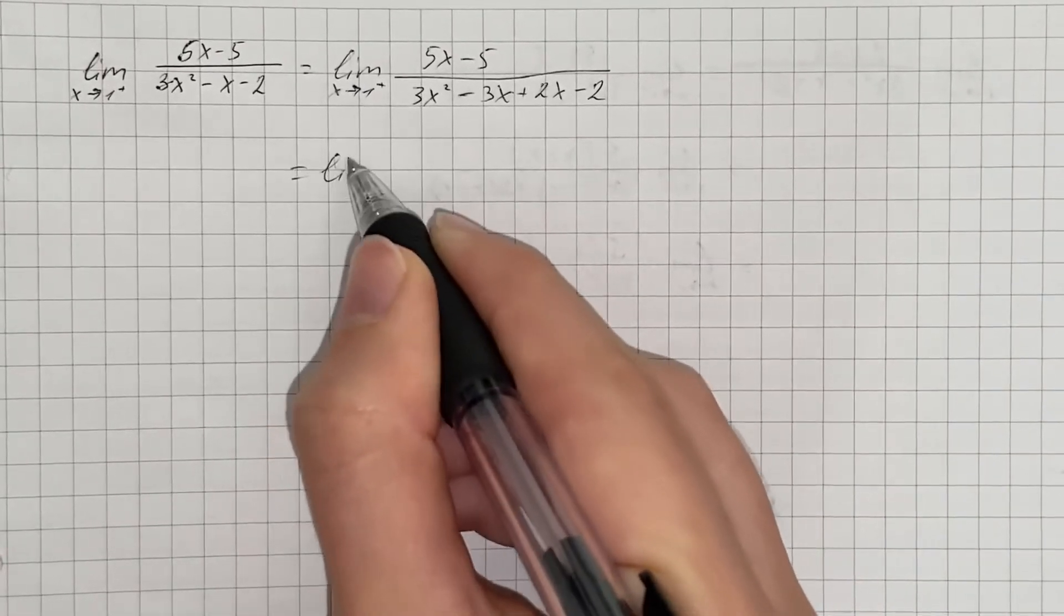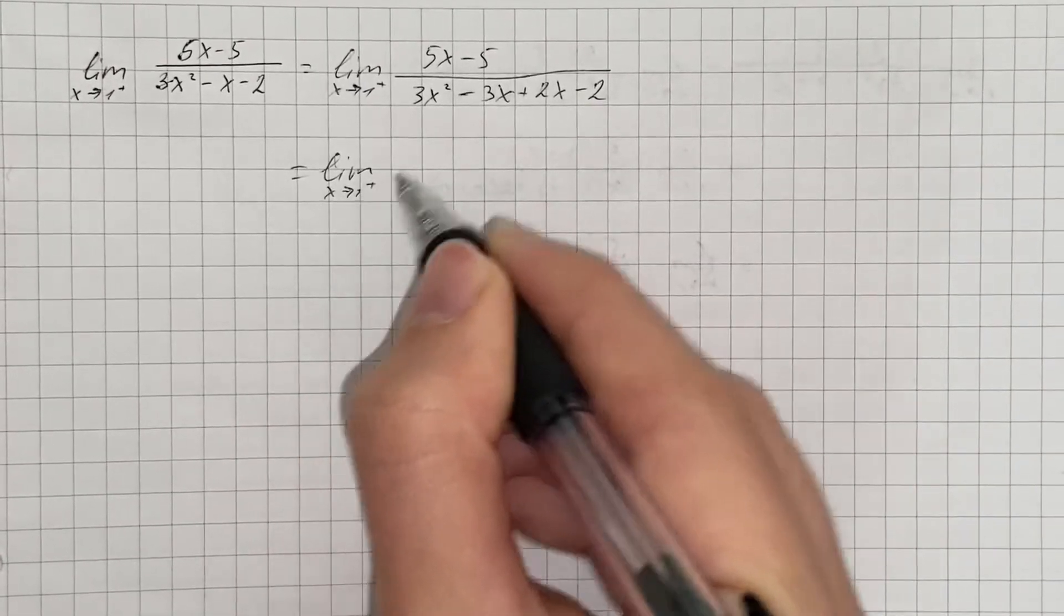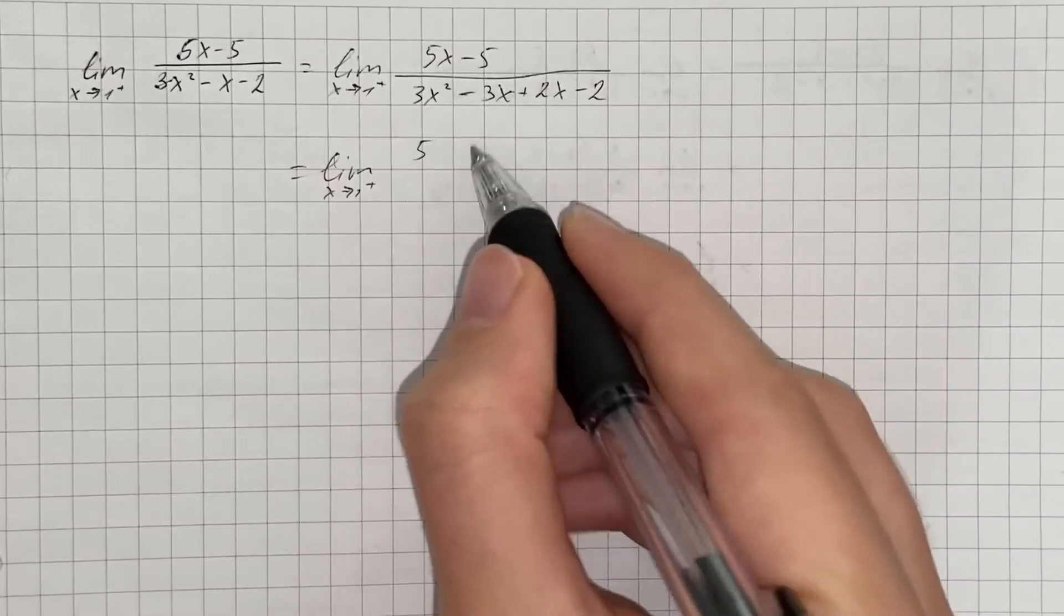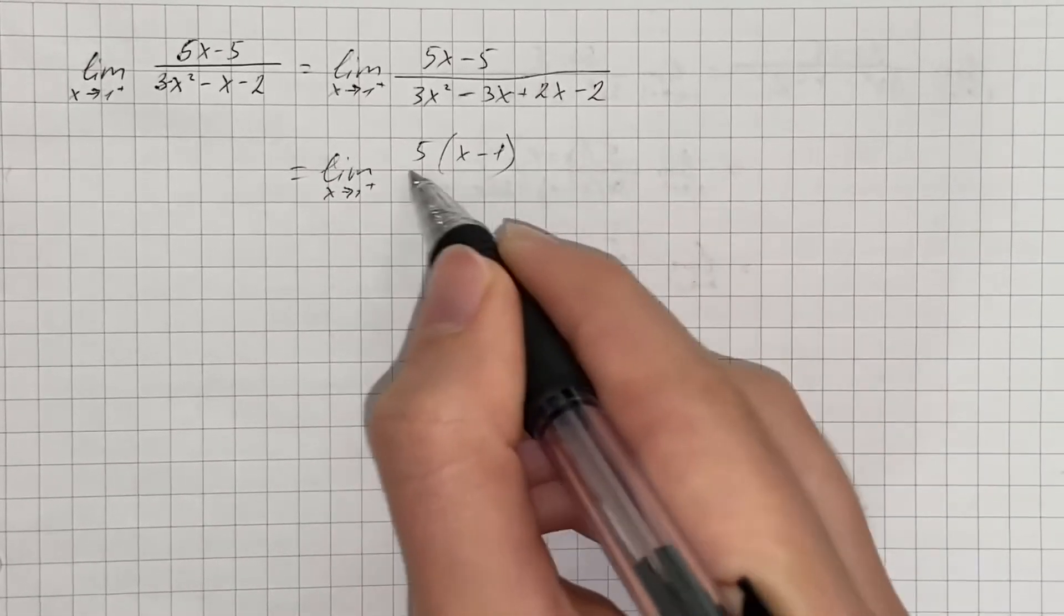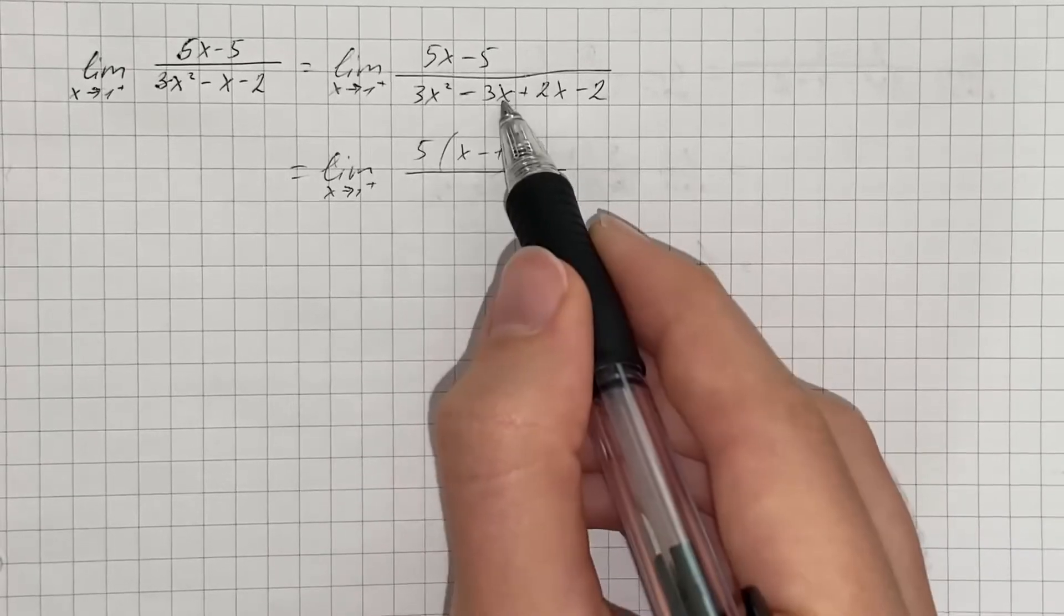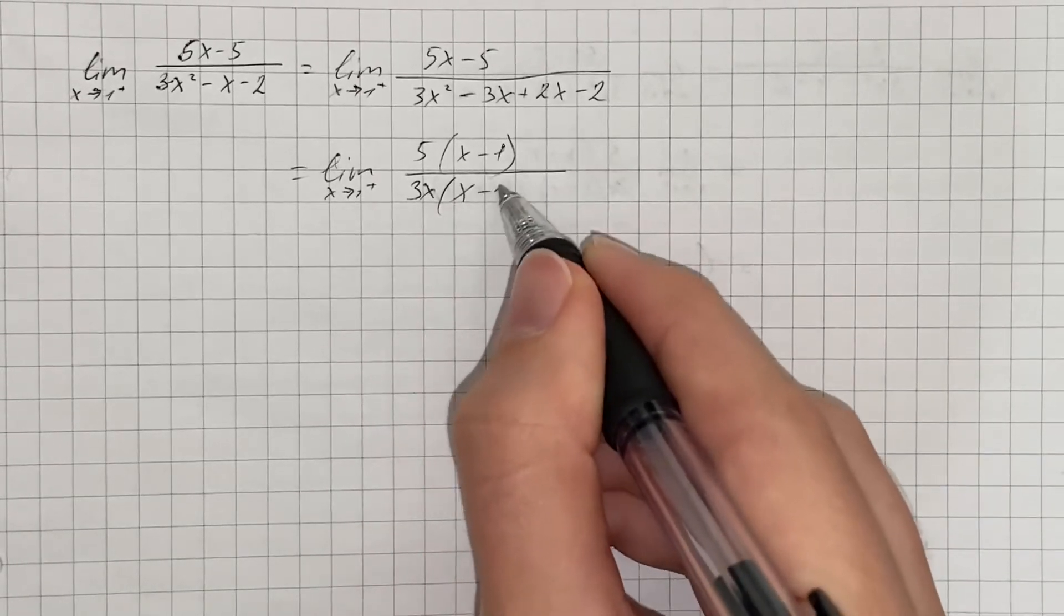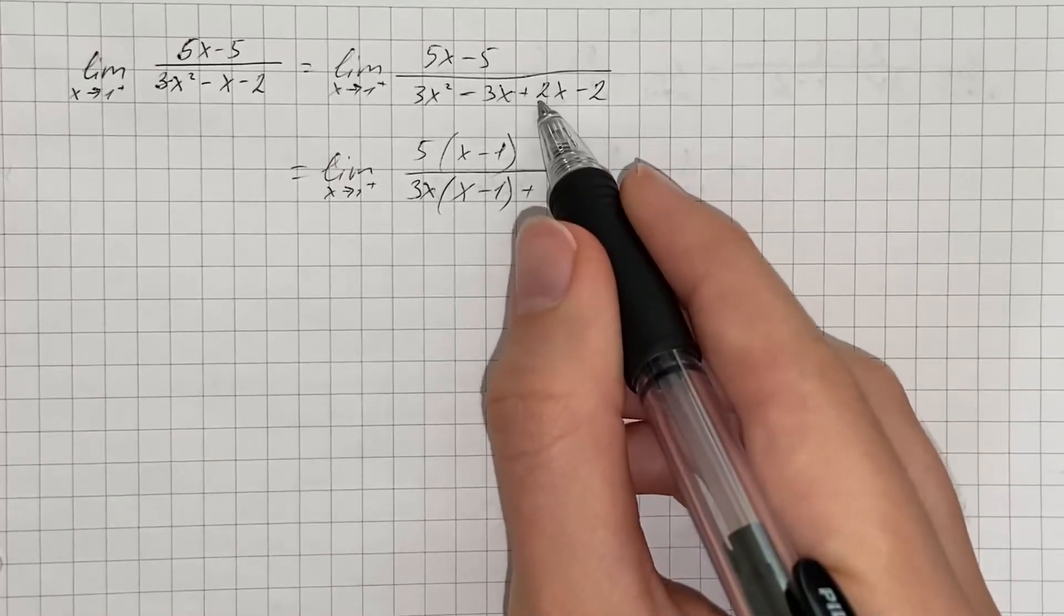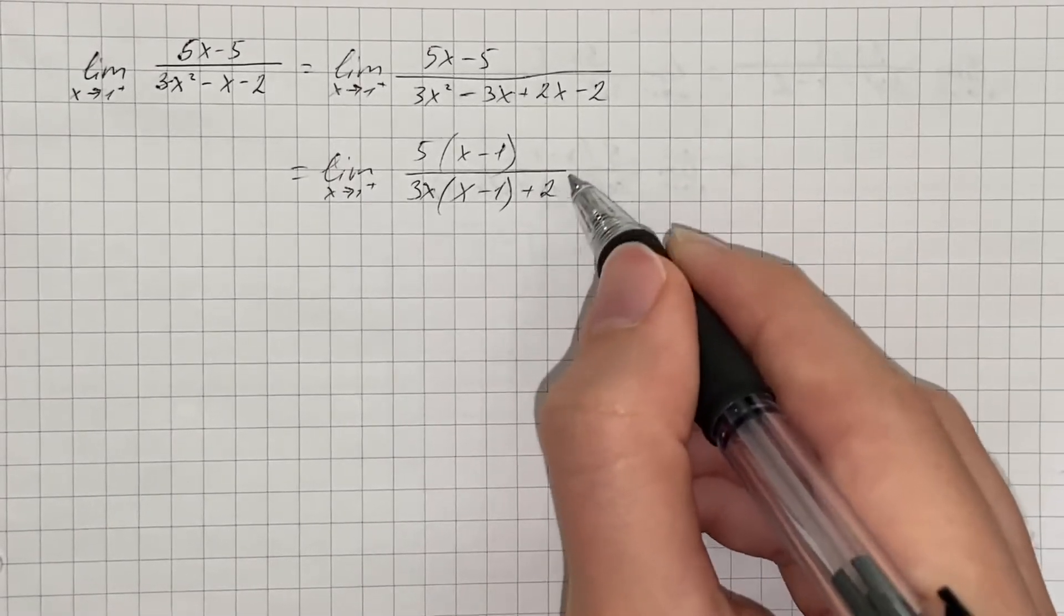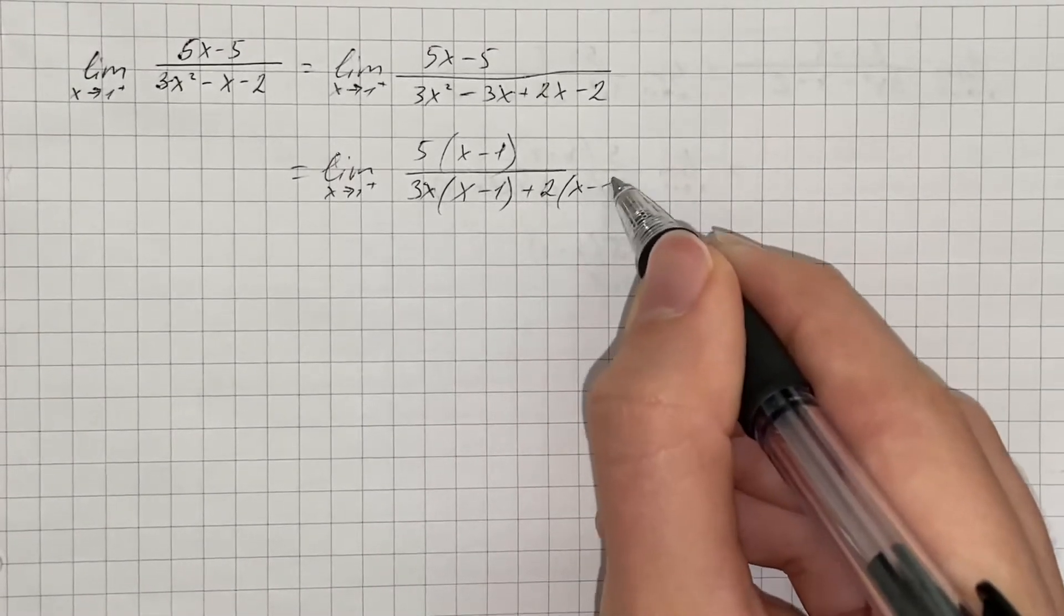So now we're going to take out 5 in the numerator. That's going to be 5 times x minus 1. And here we're going to take out 3x. So it's going to be 3x times x minus 1 and plus factor out 2, 2 multiplied by x minus 1.